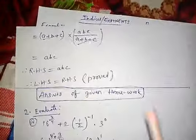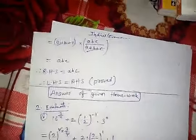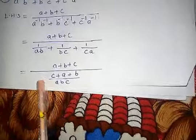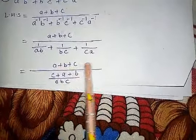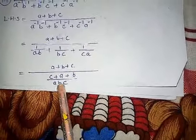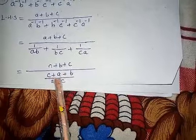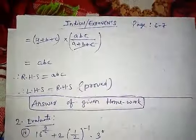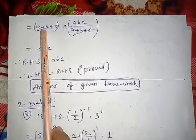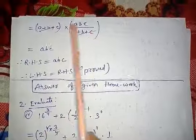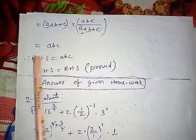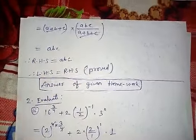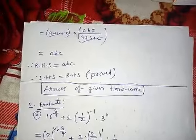Now one very important thing: we have a division sign, so A plus B plus C divides, ABC goes up and (C + A + B) comes down. After this, the (A + B + C) and (C + A + B) cancel each other. So we are left with ABC. The right hand side is also ABC, so left hand side equals right hand side — proved.